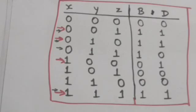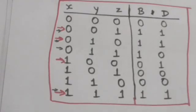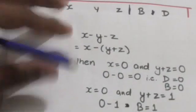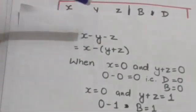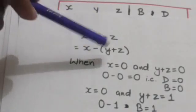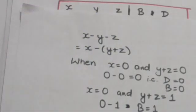This is the truth table for the full subtractor, which defines the relationship between input variables X, Y, Z and output variables B and D. The full subtractor evaluates the expression X minus (Y plus Z), subtracting Y and Z from X.